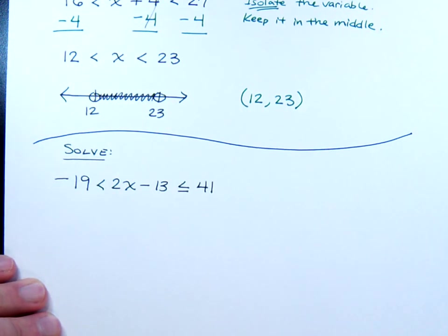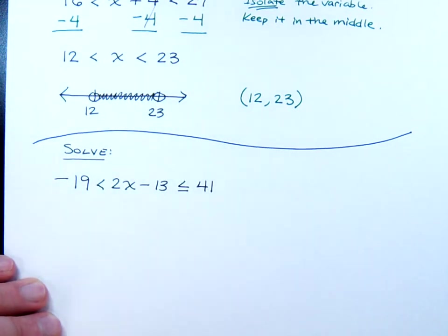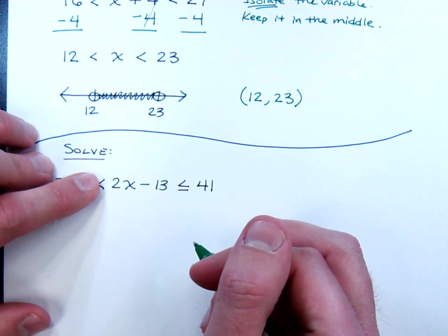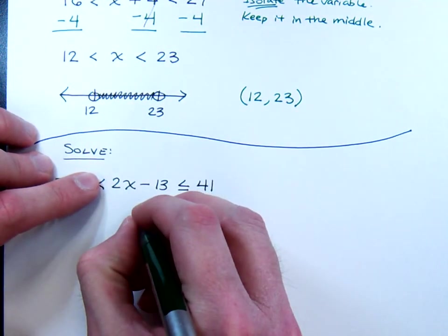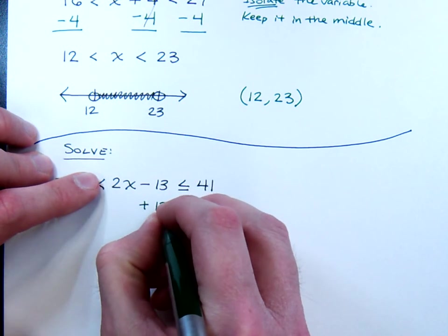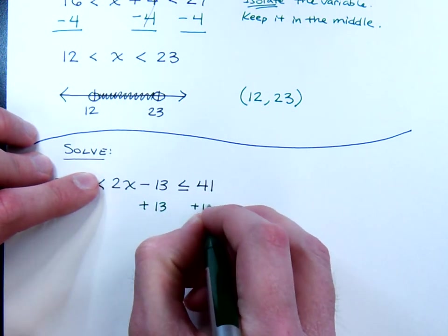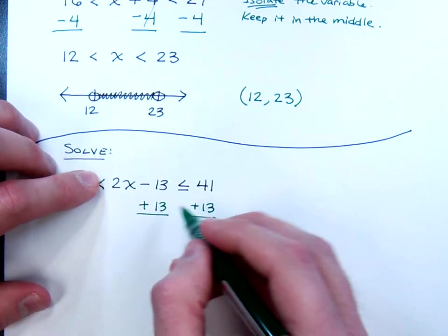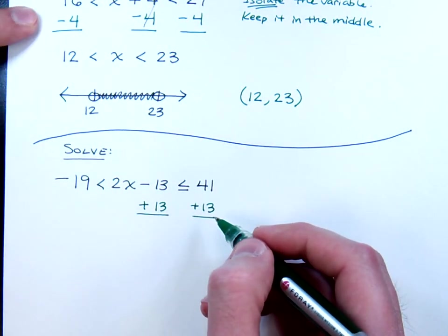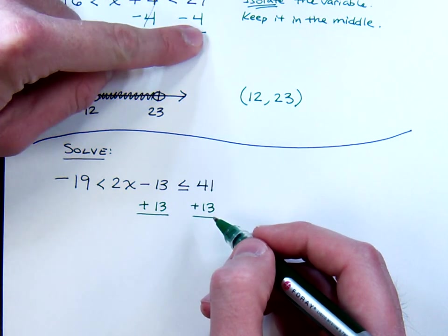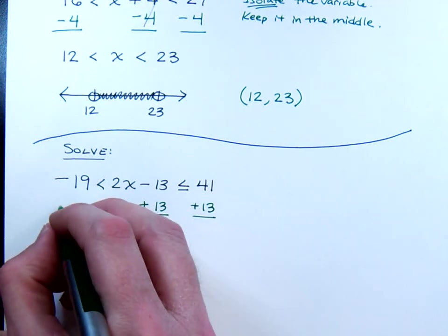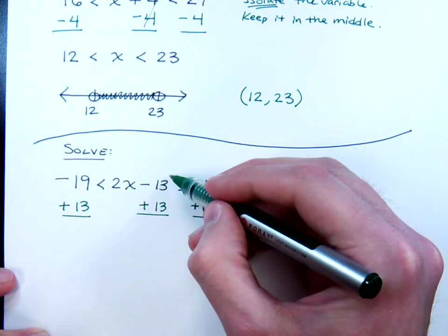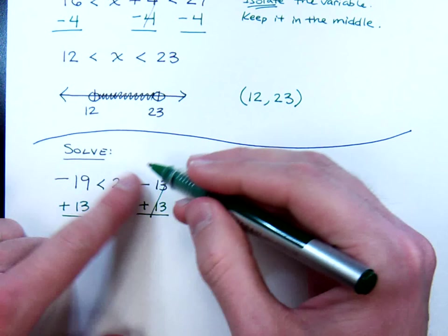If I were going to solve this inequality or take the steps to get x by itself, let's start with this guy right here: 2x minus 13 less than or equal to 41. I think we would all agree that if this were a simple equation, we would add 13 to both sides, just like this. But as we saw in the last example, it's not just about doing it to two sides. You'd have to do it to all three parts of the inequality. So let me add 13 over here as well. If I add 13 to one part of the inequality, add it to the other parts as well.